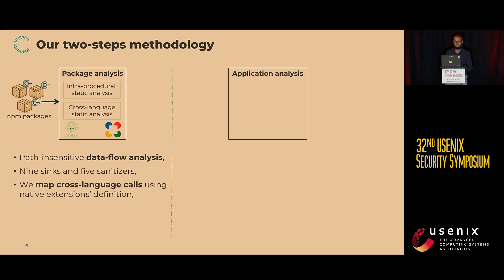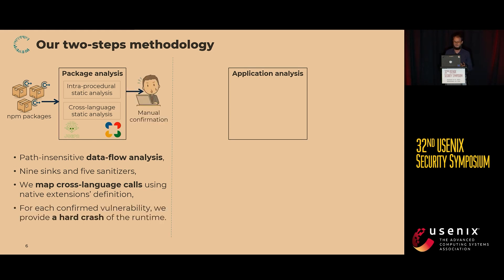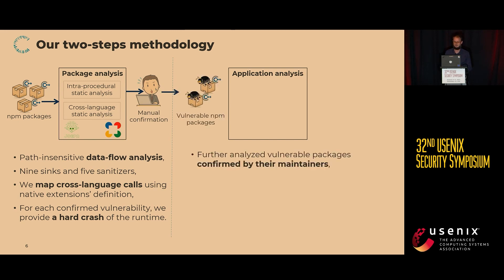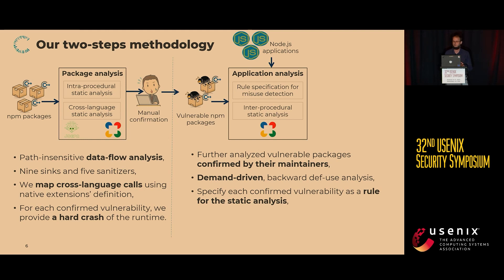In the first phase — package analysis — we perform mostly intra-procedural analysis. We look at the two functions around the language boundary: the C++ one and the JavaScript one. We map them using the definition of the native extension and flag a set of possible problems. We then manually inspect them, report to developers, and only consider those confirmed by package maintainers. In the second phase — application analysis — we perform inter-procedural static analysis to look for remote calls to web applications that end up in these problematic packages with native extensions.